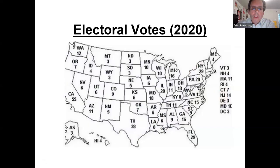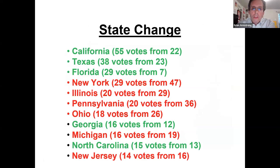This shows where Texas is now at 38 electoral votes, Florida at 29, and California at a whopping 55. New York is sitting at 29, which is much lower than it used to be. This gives you an overview of how it's changed over time.